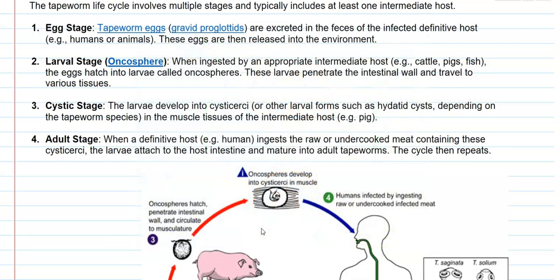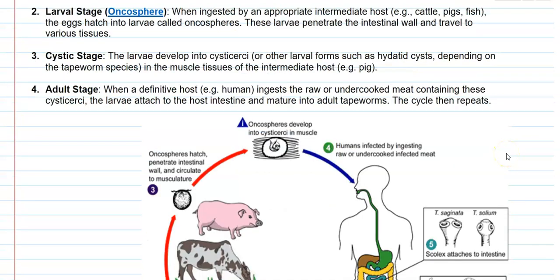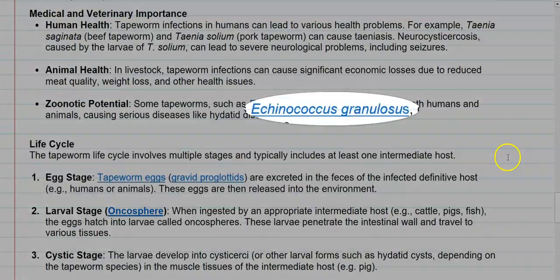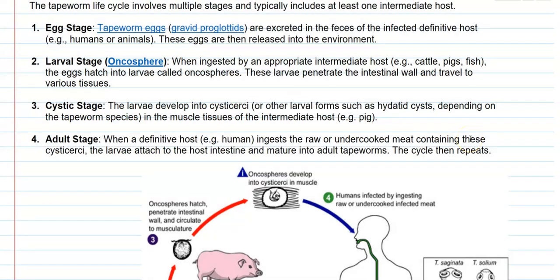These larvae commonly penetrate the intestinal wall and travel to various tissues or organs of the animals. The next stage is the cystic stage. The larvae develop into cyst forms — cysticerci is a common form. Apart from that, hydatid cysts can be formed in some species of tapeworms such as Echinococcus. Finally, the cystic forms can invade the muscle tissues of the intermediary host, which includes cattle or pigs.